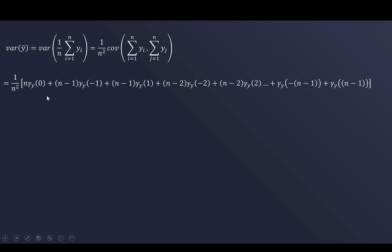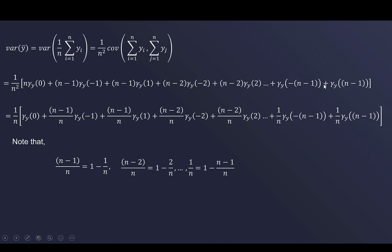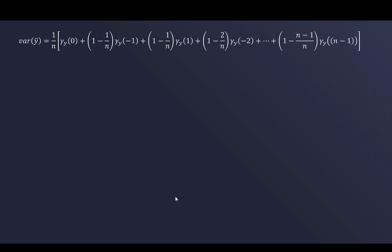Substituting back, we write the variance of y-bar in a more general form. Taking 1/n² inside, we note that (n−1)/n = 1 − 1/n, (n−2)/n = 1 − 2/n, and so on, down to 1/n = 1 − (n−1)/n. Replacing each coefficient this way, the formula can be rewritten more cleanly, bringing it closer to the final compact form we want to derive.